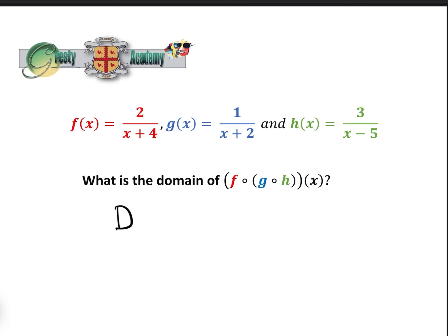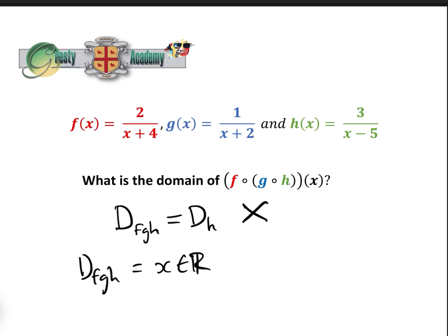They either say that the domain of fgh equals the domain of h, which is just the input — which is wrong — or they say the domain of fgh is all x in the reals with x not equal to minus four, minus two, or five, basically looking at the three denominators where x can't take those values, otherwise the function is infinite. Both of these are incorrect.